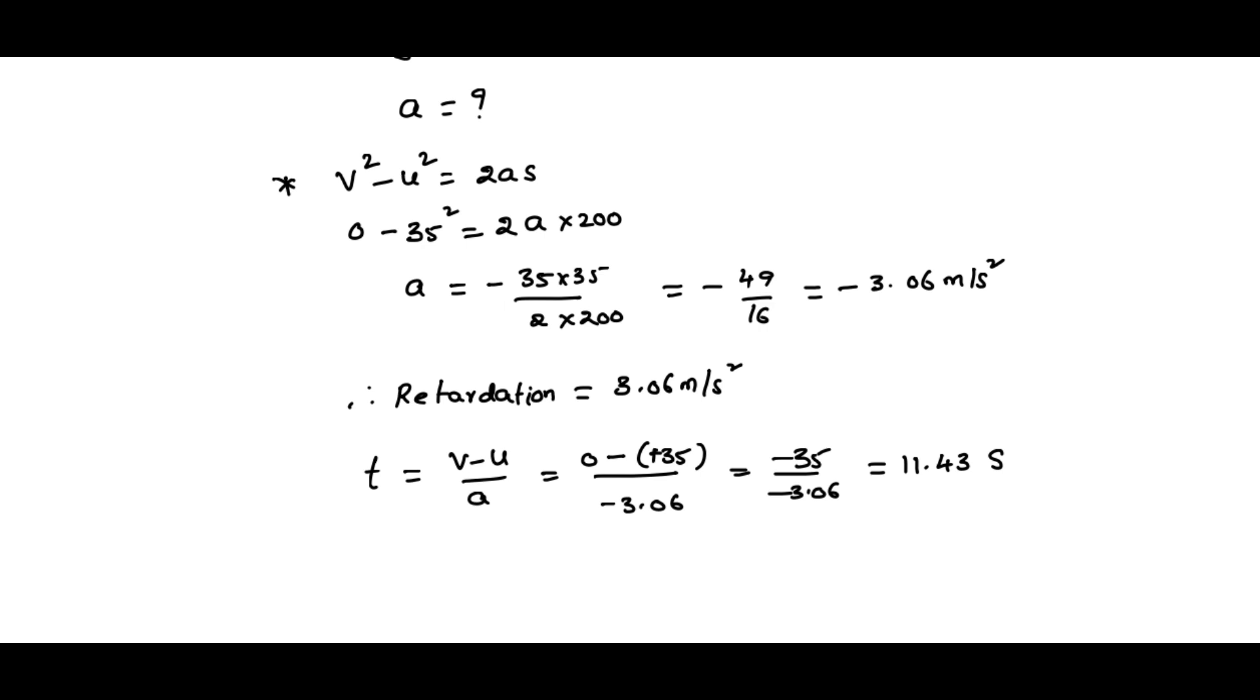Therefore the time taken by the car to stop, for its final velocity to become 0, is 11.43 seconds. So this is retardation as well as the time. Thank you.